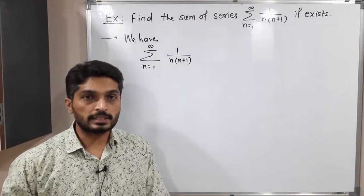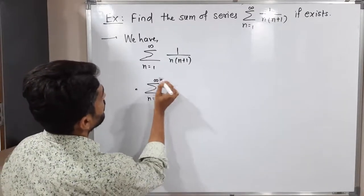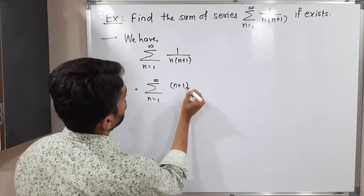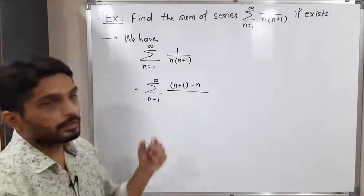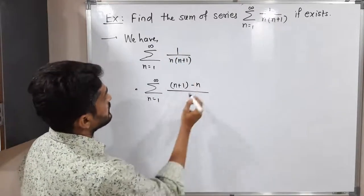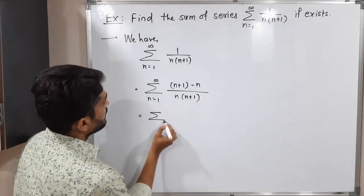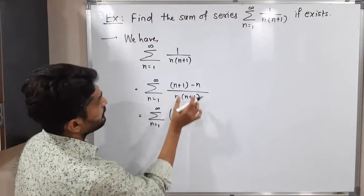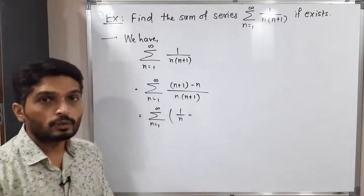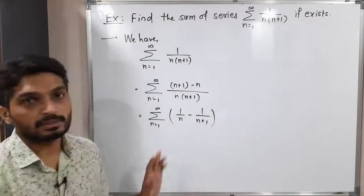The same series can be expressed in a different way. I will adjust the numerator: 1 can be replaced as (n+1) minus n. So the numerator becomes (n+1 - n) upon n(n+1). Dividing separately, (n+1) upon n(n+1) gives 1/n, and n upon n(n+1) gives 1/(n+1). Therefore the general term 1/n(n+1) equals 1/n minus 1/(n+1).